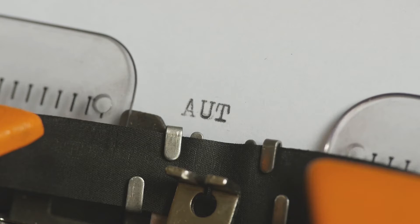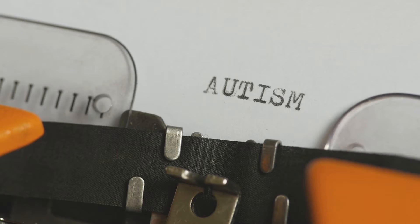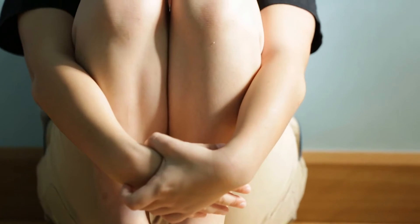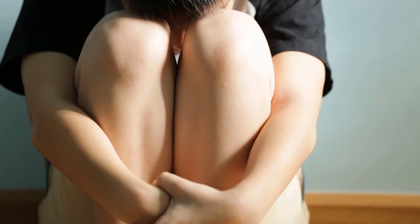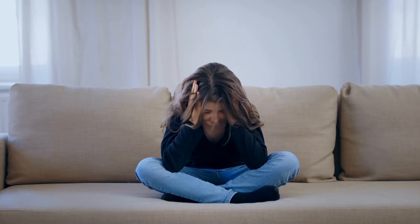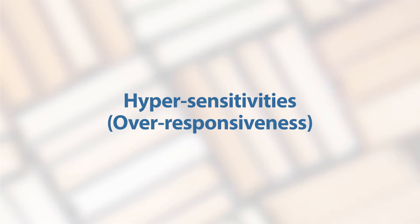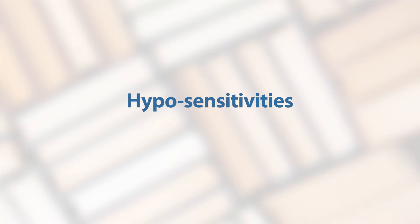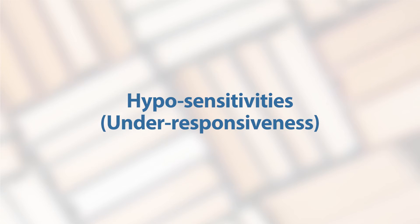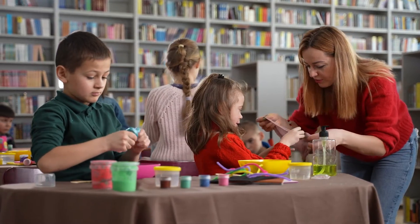According to the Interactive Autism Network, studies say from 30% to more than 90% of people with autism either ignore or overreact to ordinary sights, sounds, smells, or other sensations. Therefore, sensory issues related to autism can involve both hypersensitivities or over-responsiveness and hyposensitivities or under-responsiveness to a wide range of stimuli. Someone with autism may process information from their senses differently than a neurotypical person.